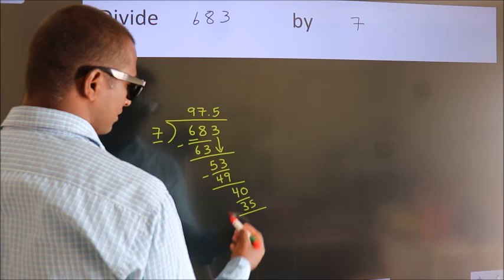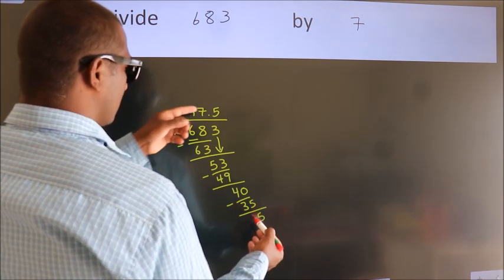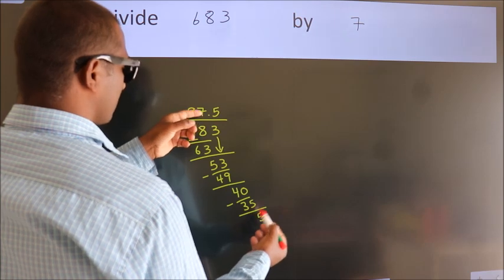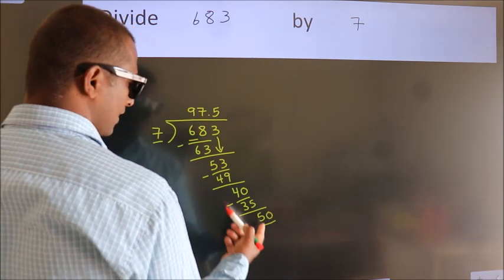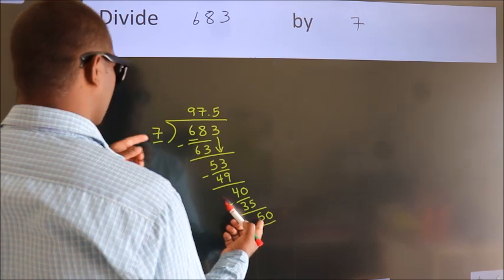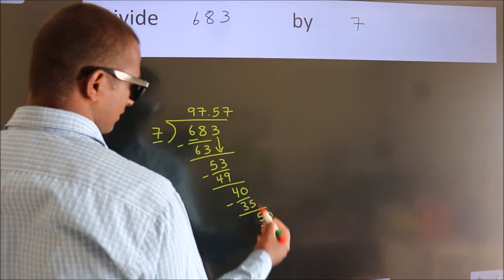Now we subtract, we get 5. After this, we already have the decimal. So directly take 0. So 50. A number close to 50 in the 7 table is 7 sevens, 49.